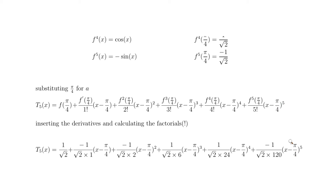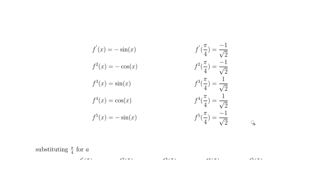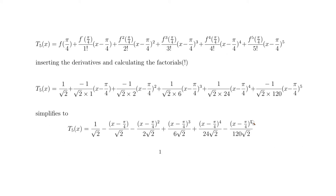Now we simplify. The first term stays as 1/√2. For the second term, −1 over root 2 divided by 1 simplifies: the minus sign flips, leaving −(x − π/4)/√2. For the third term, similarly we get −(x − π/4)²/(2√2), since root 2 times 2 becomes 2√2.